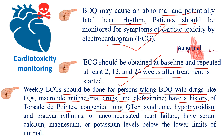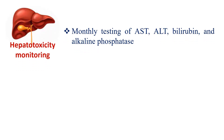Weekly ECG is also indicated for patients with a history of torsades de pointes, congenital long QTcF syndrome, hypothyroidism, bradyarrhythmias, or uncompensated heart failure, or for patients with serum calcium, magnesium, or potassium levels below the lower limits of normal. Hepatotoxicity monitoring is done by monthly testing and measurement of AST, ALT, bilirubin, and alkaline phosphatase levels.